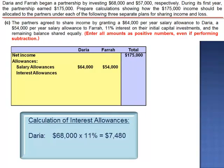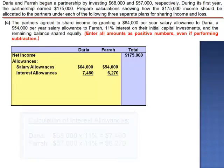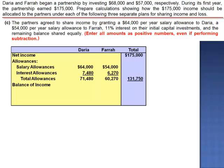Interest allowances: 11% of Daria's $68,000 initial investment is $7,480. 11% of Farrah's $57,000 investment is $6,270. Total allowances to Daria: $71,480. Total allowances to Farrah: $60,270. The sum of all allowances is $131,750, leaving a balance of income equal to $175,000 minus $131,750, which is $43,250.